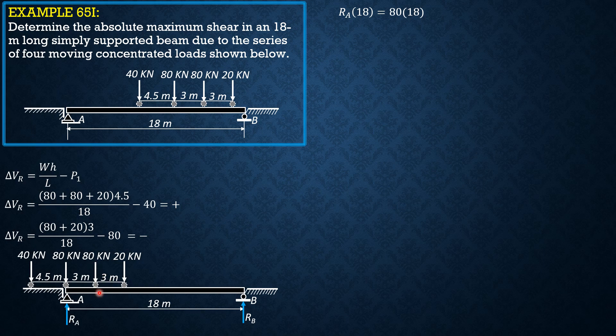plus 80 times 15 plus 20 times 12. So this is 12. So Ra is equal to 160 kilonewtons.